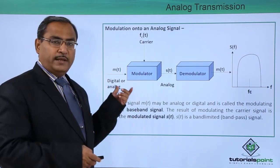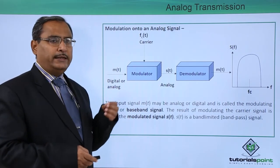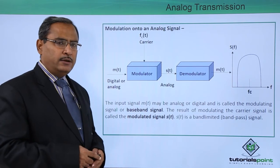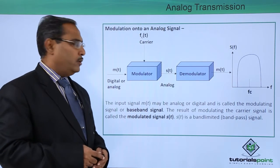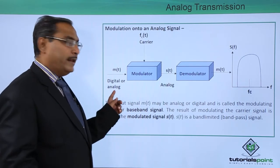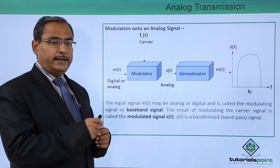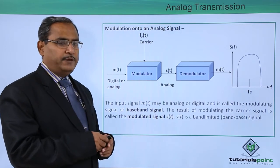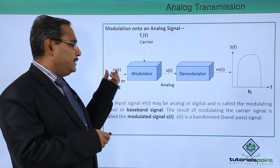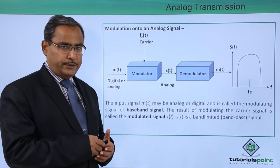At the source we might be having either digital data or analog data. This is our digital data or analog data, and we are representing it as m(t), that is the signal which is going to be modulated.